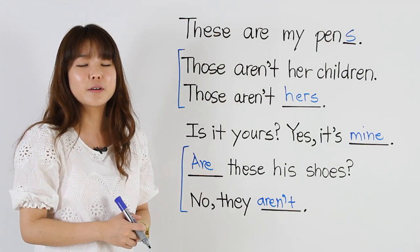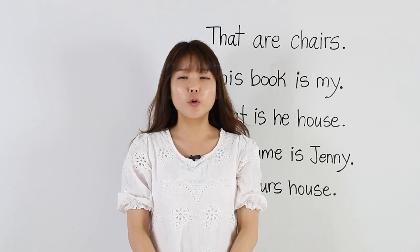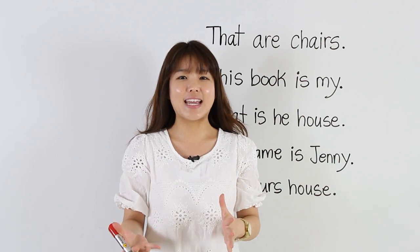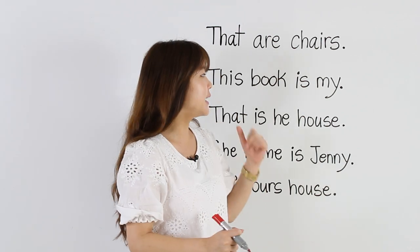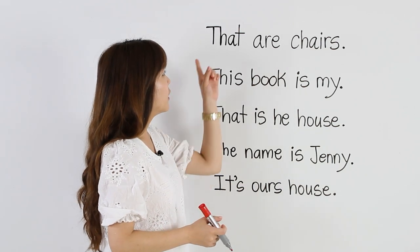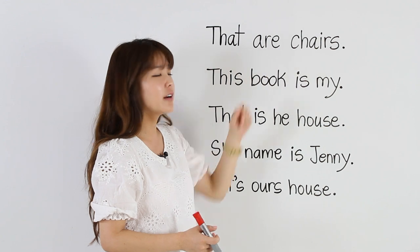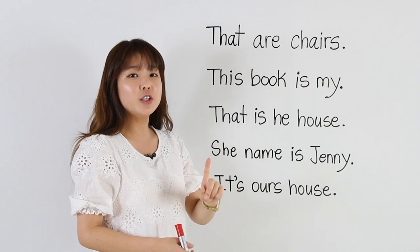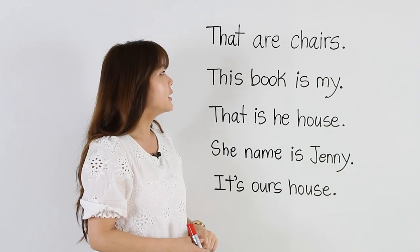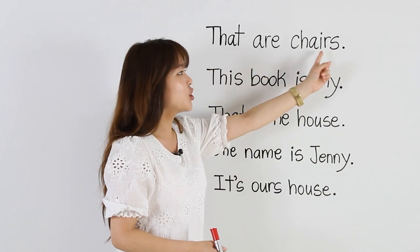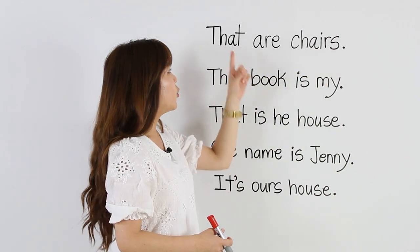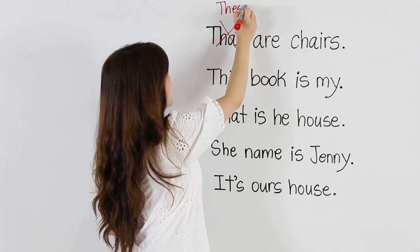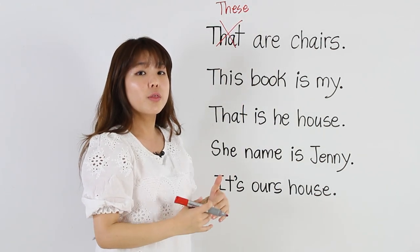For this last part, we're going to look at sentences, but they're all wrong — they all have mistakes, so you have to find the mistakes. The first one says 'That are chairs.' We know that's wrong. 'That' is used for singular nouns — one. But it says 'are' and 'chairs' with an S. So we have to change this word. We can say 'These are chairs' or 'Those are chairs.'